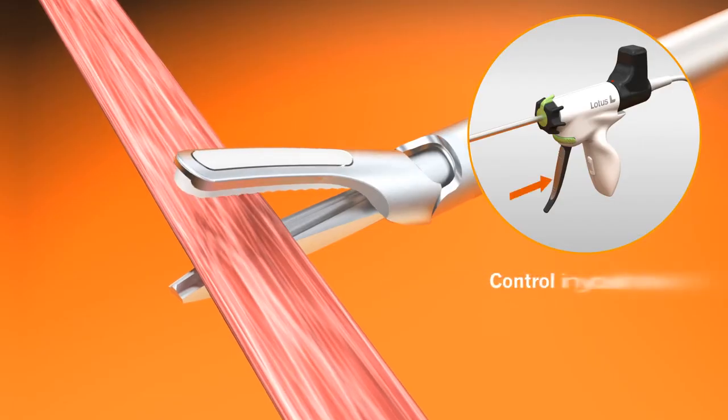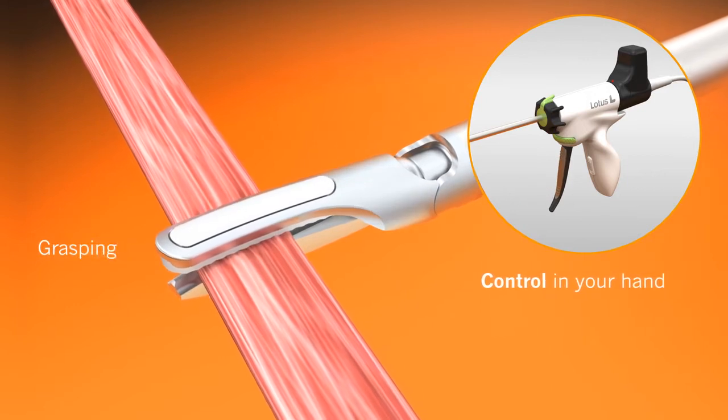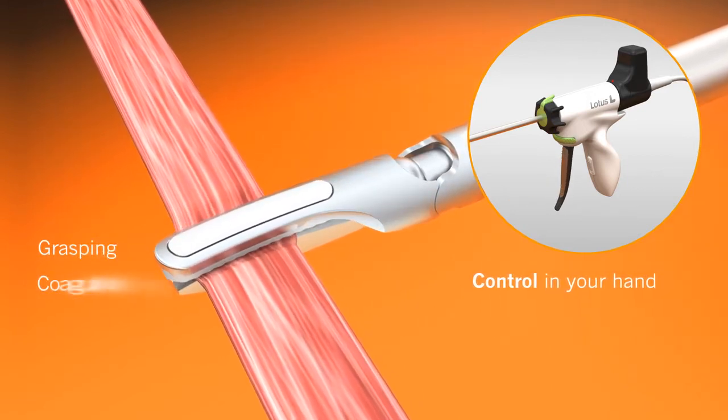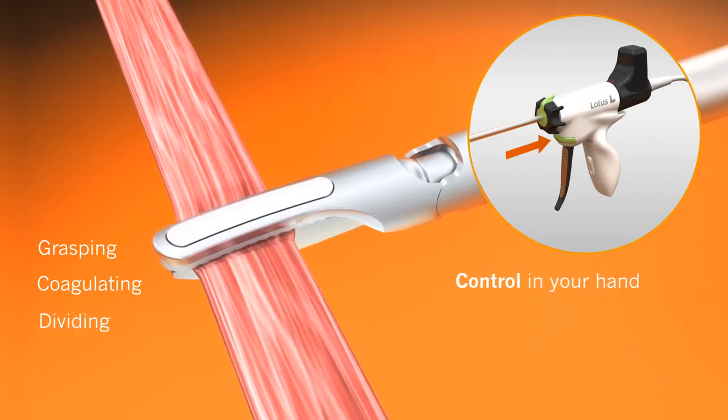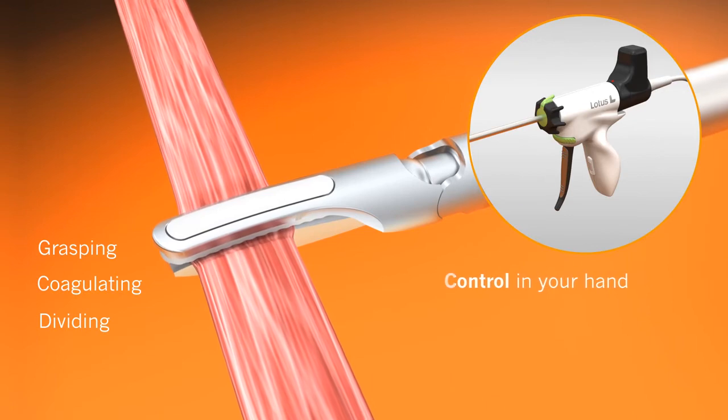Pressure on the handpiece trigger has a direct influence on the cutting speed of the Lotus ultrasonic scalpel. The high tactile feedback enables the surgeon to precisely control the dissection of the tissue.